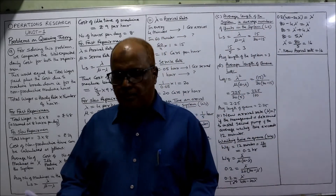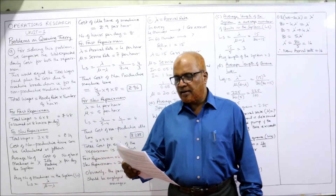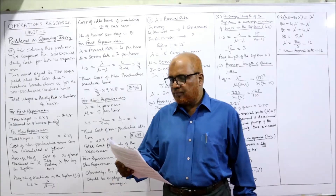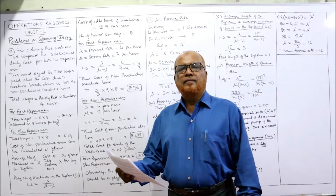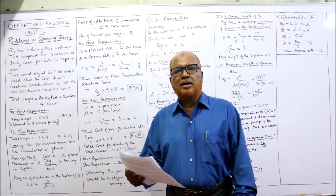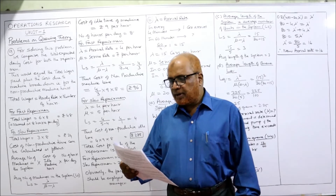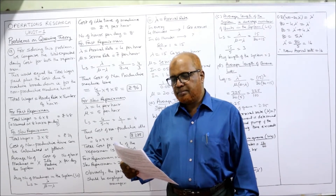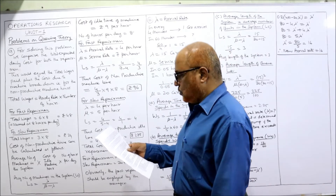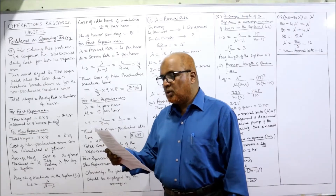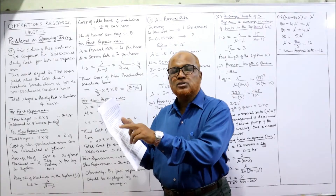Problem number nine: a repairman is to be hired to repair machines that break down following a Poisson process with an average rate of four per hour. That means the arrival rate lambda is four per hour. The cost of non-productive machine time is nine rupees per hour — there's a printing mistake in the problem, it is only nine rupees.